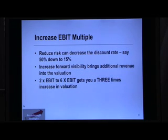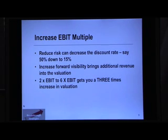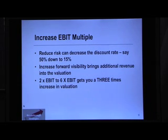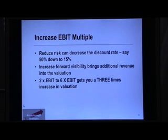When you put these two together — a lower discount rate and longer-term visibility — it can have a dramatic effect on valuation. If we can decrease the discount rate from 50% to 15% and increase the visibility of future earnings, moving from 50% to 15% is effectively moving from a 2 times EBIT to a 6 times EBIT, and that will get you a 3 times increase in valuation. This allows you to take much better control over your valuation, understanding that it's a combination of risk and visibility — two aspects of your business that you can work on to increase valuation over time.